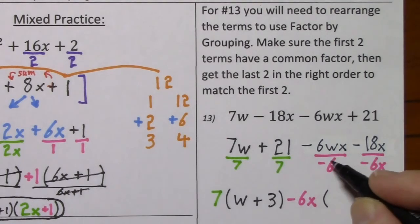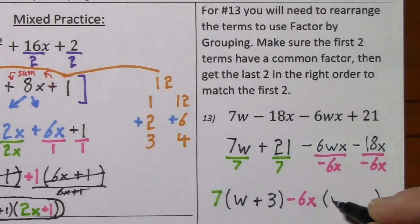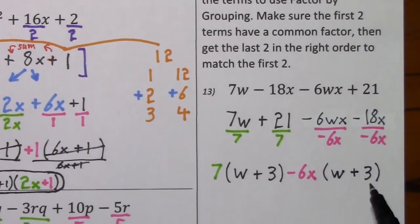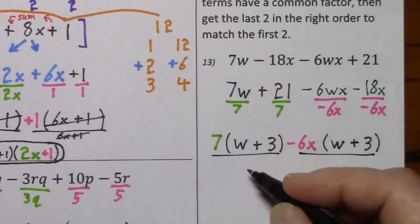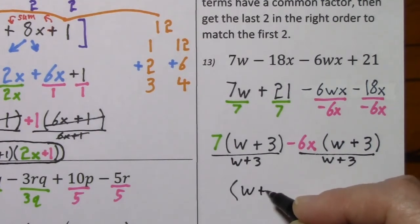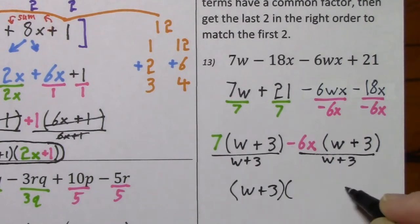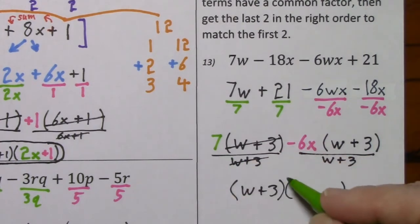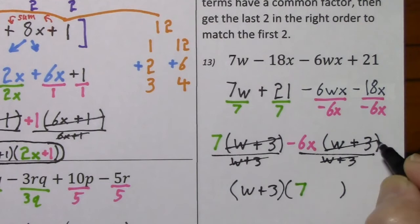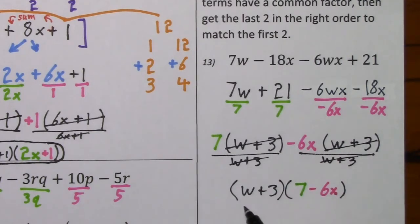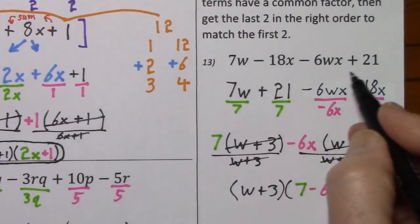The 6s would cancel, the xs cancel, and all we would have is a positive w. And here, positive 3. What we have in parentheses is identical, so we'll factor it out. Putting w plus 3 in front of another set of parentheses — when we factor it out from here, we're left with 7, and when we factor it out from here, we're left with negative 6x. So here's the factored form of our original polynomial.